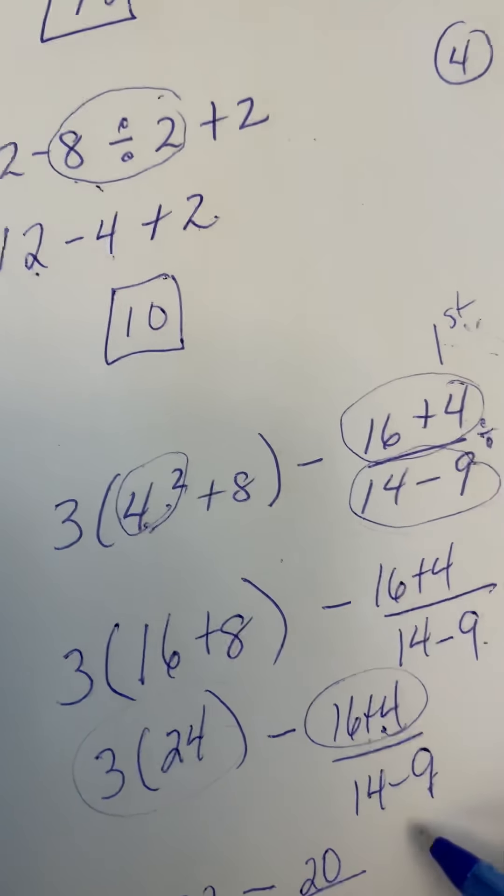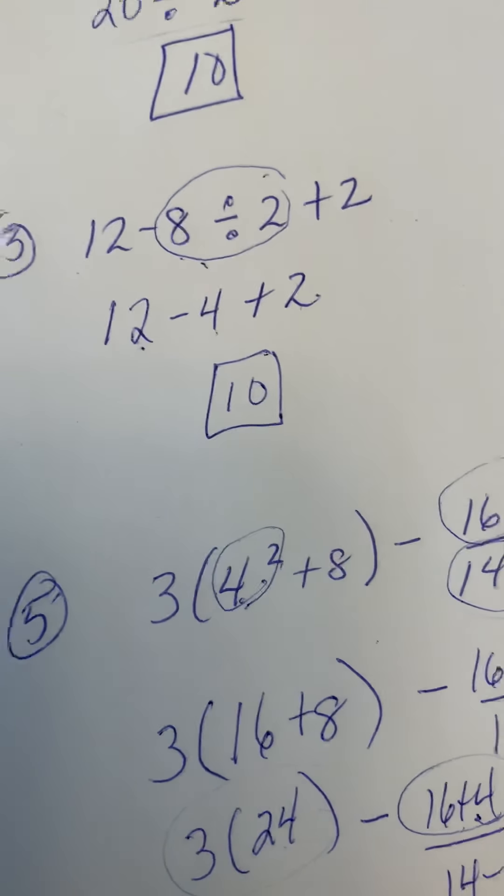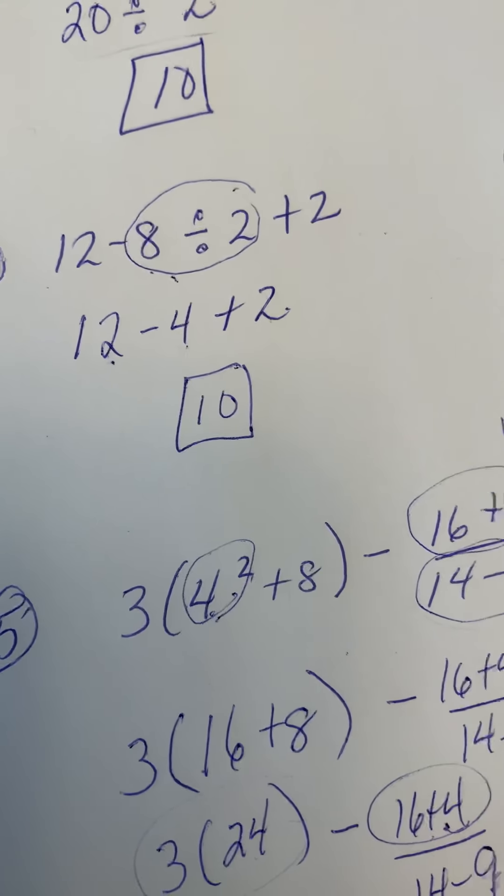And now we still have to do division and multiplication before we can do this addition. So you're going to take care of this, and that's just a simple division question. So you're going to get 72 minus, and 20 divided by 5 is 4, and your answer is going to be 68.